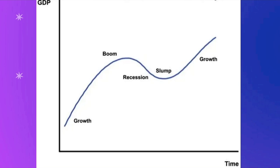Recession is when there are low levels of spending in the economy, fewer goods and services are demanded and produced, GDP is falling, and unemployment rises. A good example is during COVID, when GDP fell, unemployment rose, and spending decreased — countries were in recession. Slump is a major recession where there is a high level of unemployment and many businesses are failing.